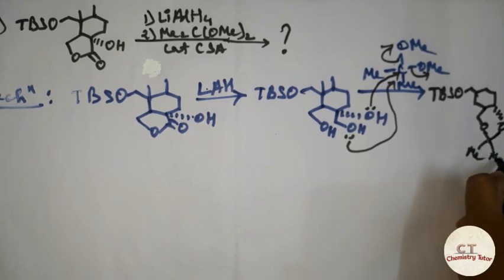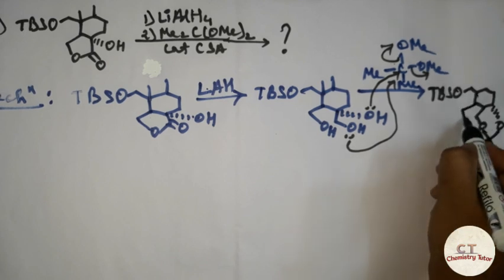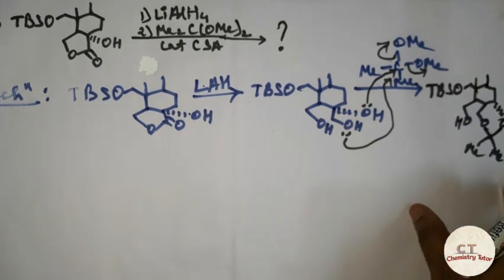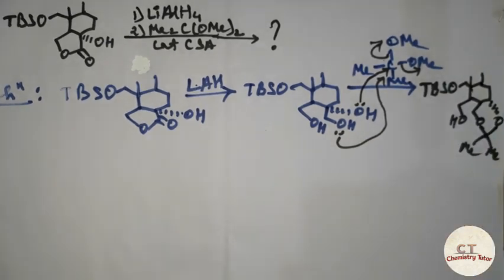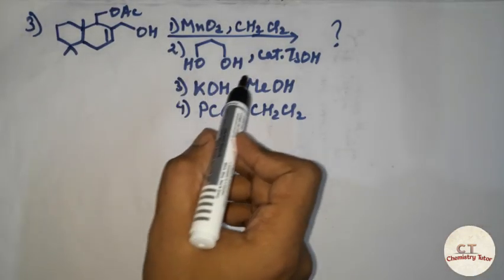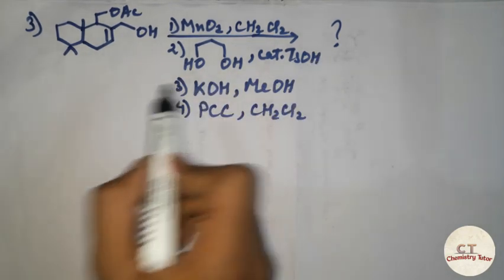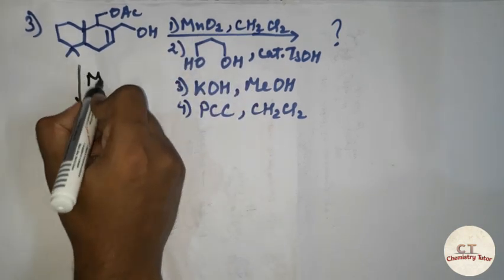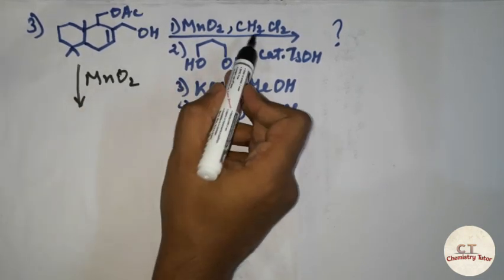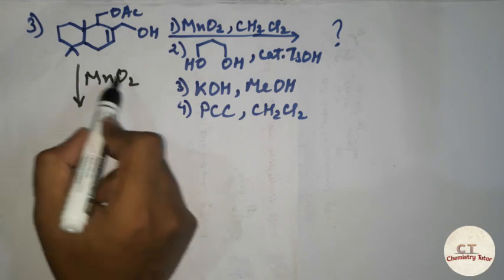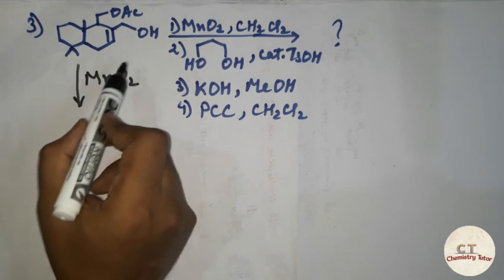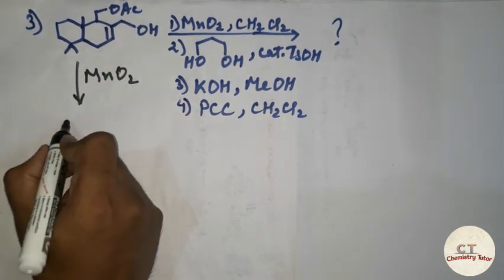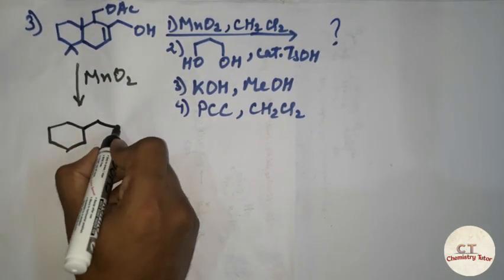So this is going to be the product, and this OH will remain as usual. Now let's move on to another example. We need to find the product of this reaction. Firstly, MnO2 is given in the presence of dichloromethane — so what is the role of MnO2? It acts as an oxidizing agent; it will convert alcohol to aldehyde.